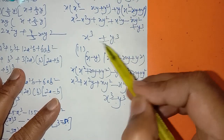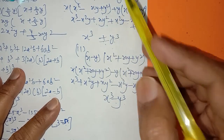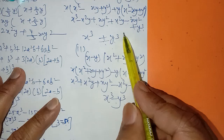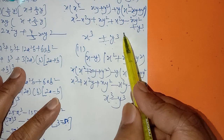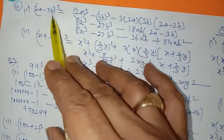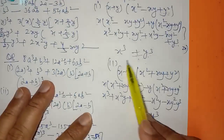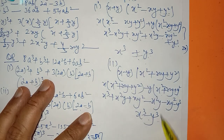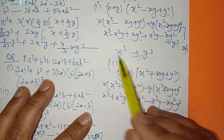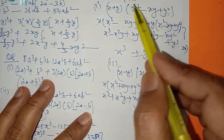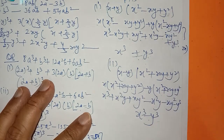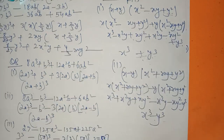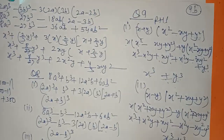This is the conclusion you have to learn: x³ plus y³ equals (x plus y)(x² minus xy plus y²). Note that this is different from (x plus y) whole cube — the whole cube is separate. If there is minus here, then plus comes in the bracket. So x³ minus y³ formula and x³ plus y³ formula — both you have to learn.